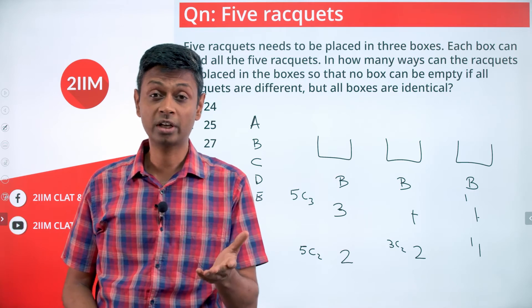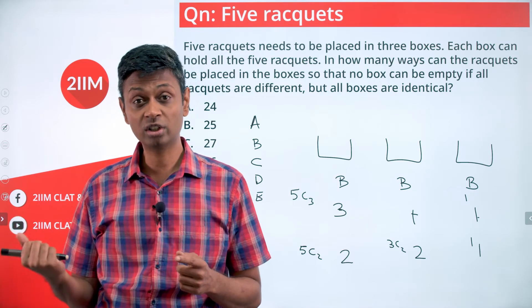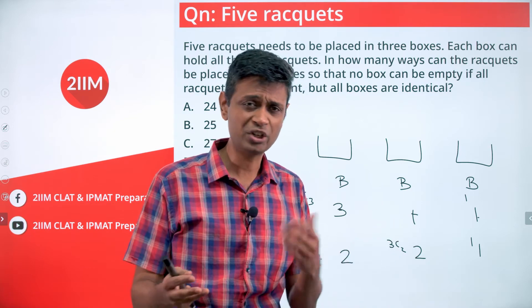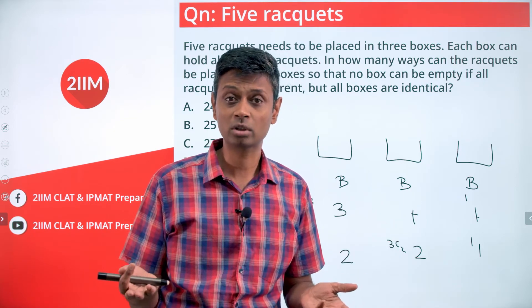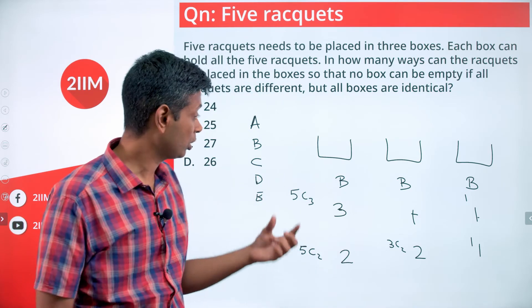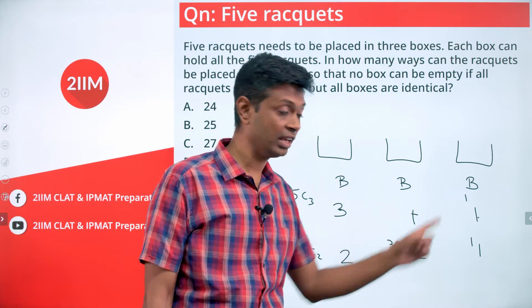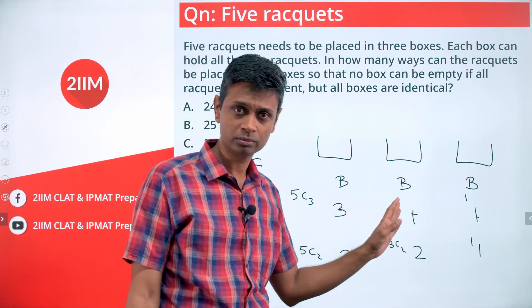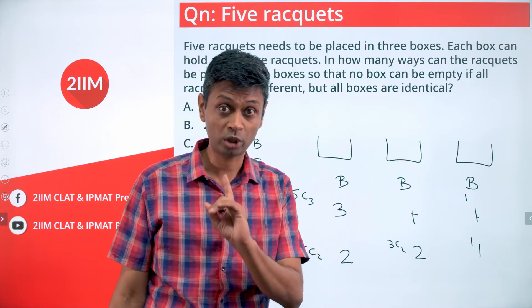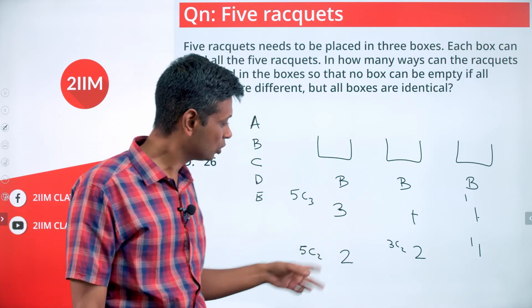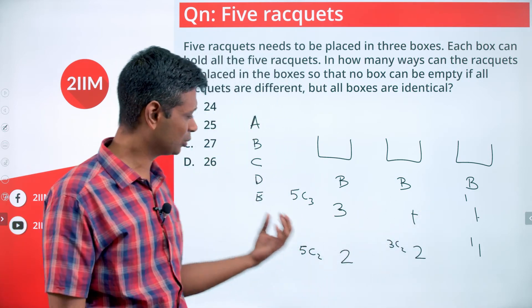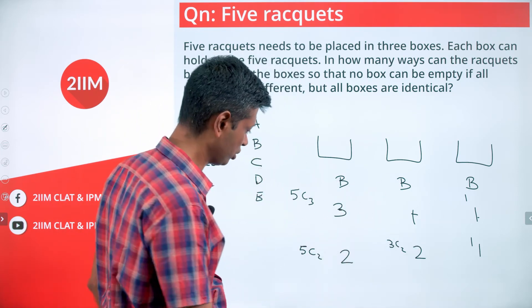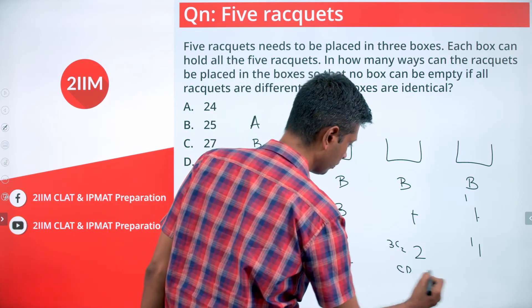Once we've selected three out of five, we're done. Put c, d, e in one box; a goes in the second; b goes in the third — or b in the second and a in the third. It doesn't matter because the boxes are identical. For (2,2,1): out of five select two, say a and b; out of the remaining three select two, say c and d; and e goes to the last box.